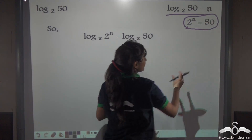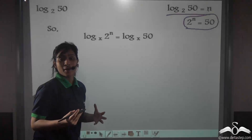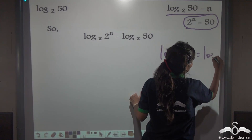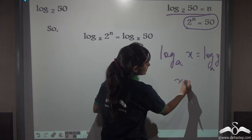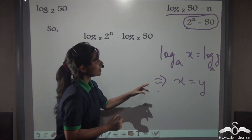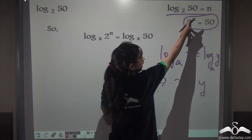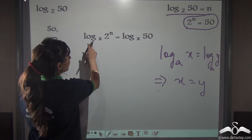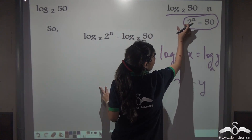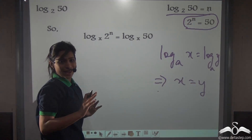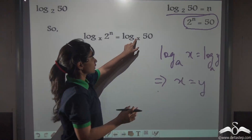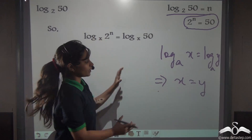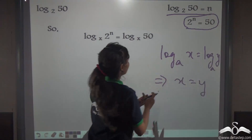If x is equal to y, then we can do log x is equal to log y. Remember in our previous lecture, we had learnt that if log x to the base a is equal to log y to the base a, then x is equal to y. Similarly, we will do the opposite here — as we have got x is equal to y, we are putting log on both sides. So log 2 to the power n with any base, say base x, is equal to log 50 to the same base x.